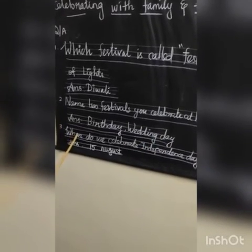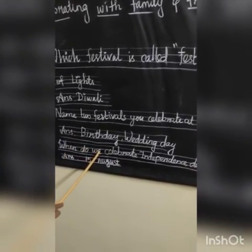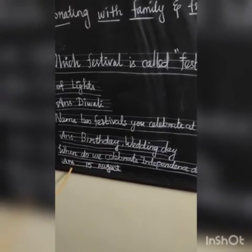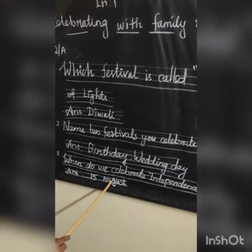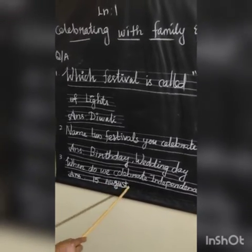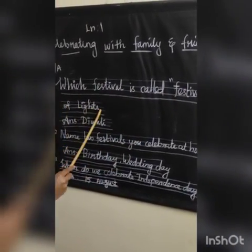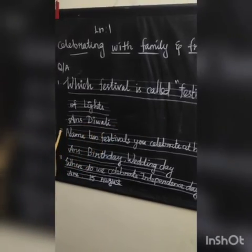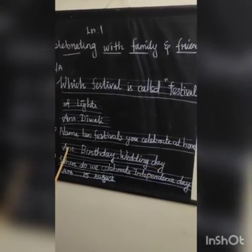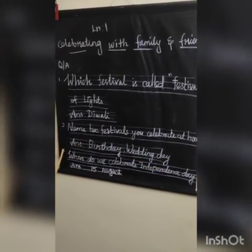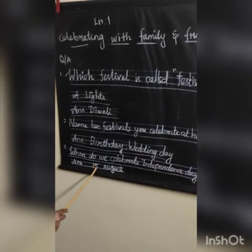3rd question: When do we celebrate Independence Day? Answer: 15th August. A-U-G-U-S-T. Review: 1st question - Festival of Lights answer: Diwali. 2nd question - Two festivals: Birthday and Wedding Day. 3rd question - Independence Day: 15th August.